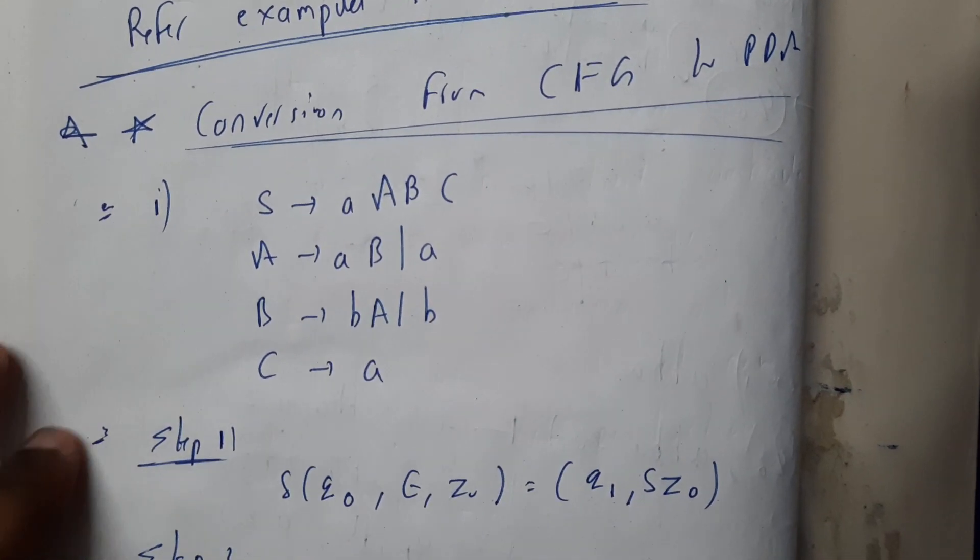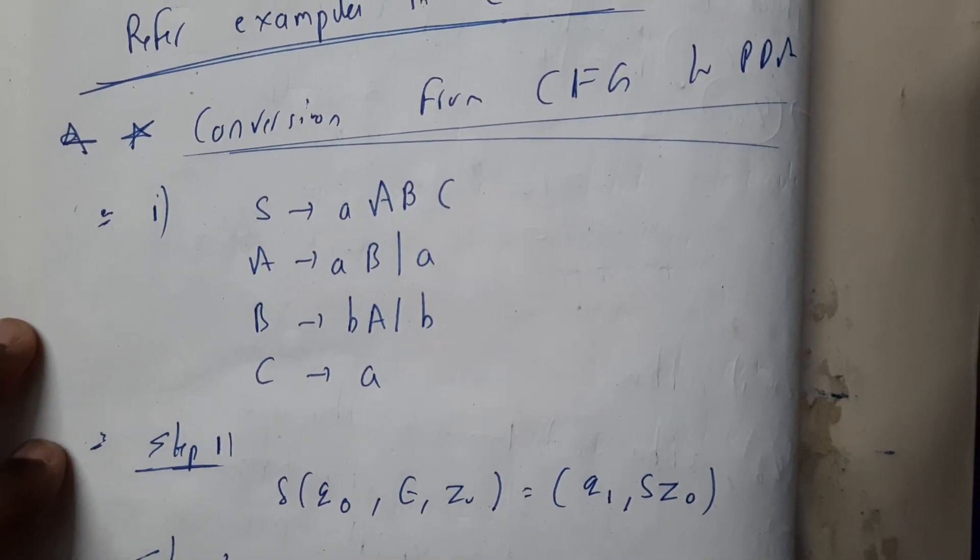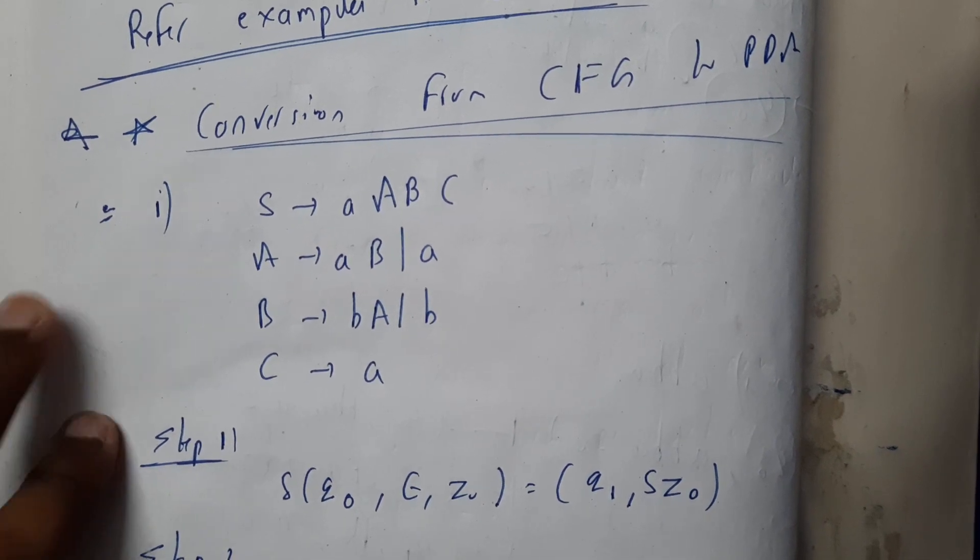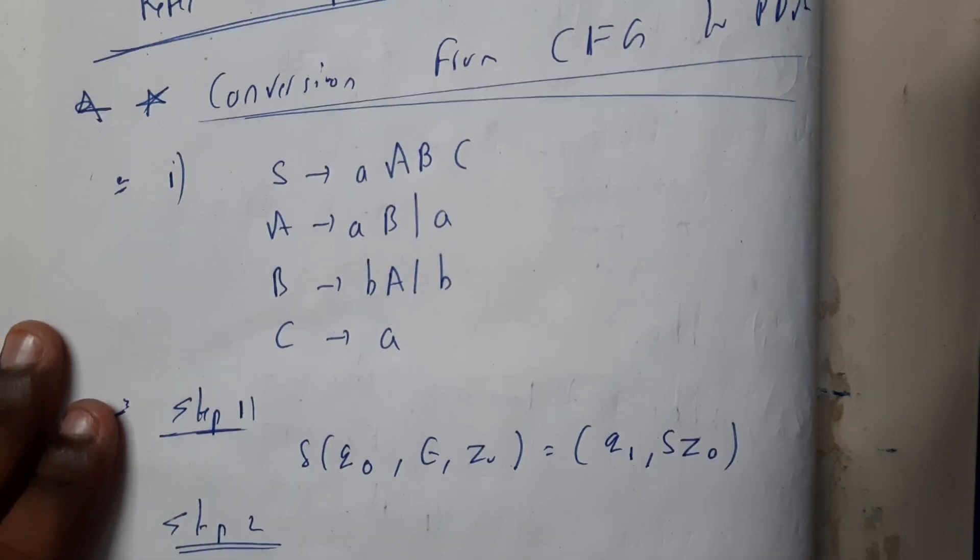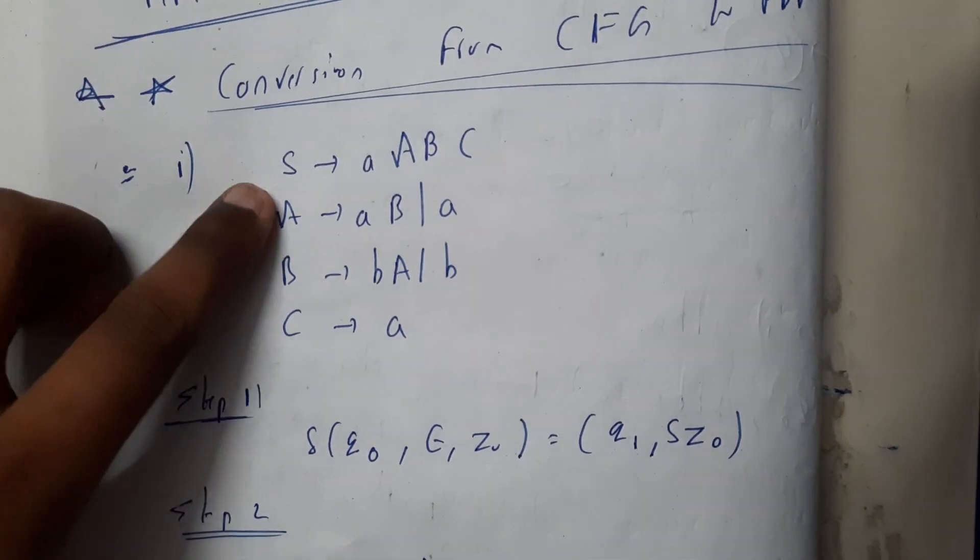Hello guys, we are back with our next tutorial. In this tutorial, let us go through the conversions from CFG to PDA, context-free grammar to pushdown automata. So basically, the context-free grammar given is S tends to small a capital A capital B capital C, A tends to a B or a.